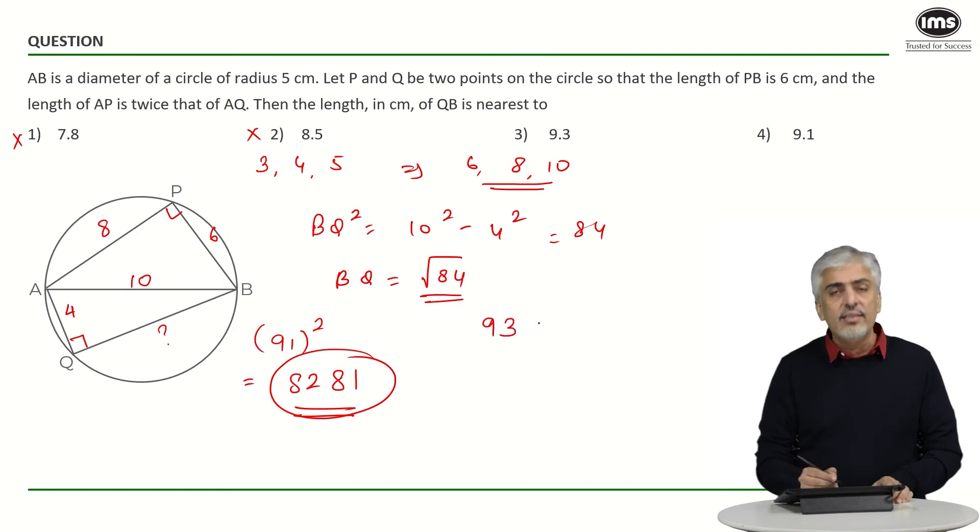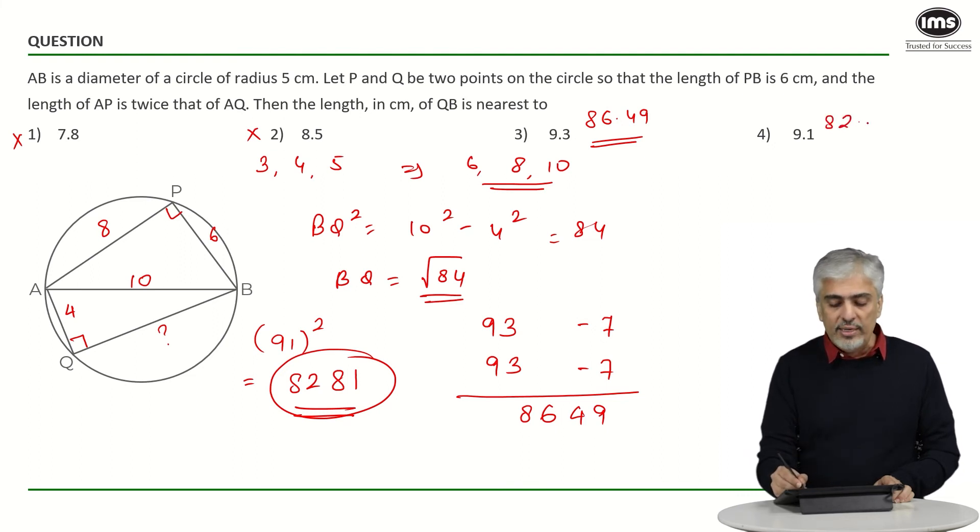What about 93 square? Let us just try this trick, the base method. Base 100. So 93 minus 100 is minus 7 and minus 7 over here. 7 times 7 is 49 and 93 minus 7 either way is 86, 8649. So 9.3 square is 86.49. Obviously you should have done it on the calculator because CAT provides a calculator. So 9.3 square is 86.49 and 9.1 is 82.81.